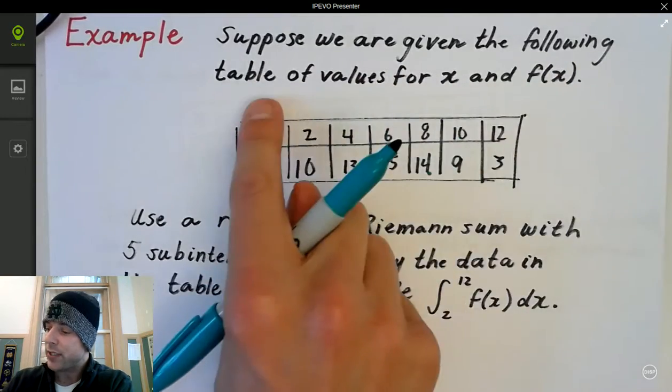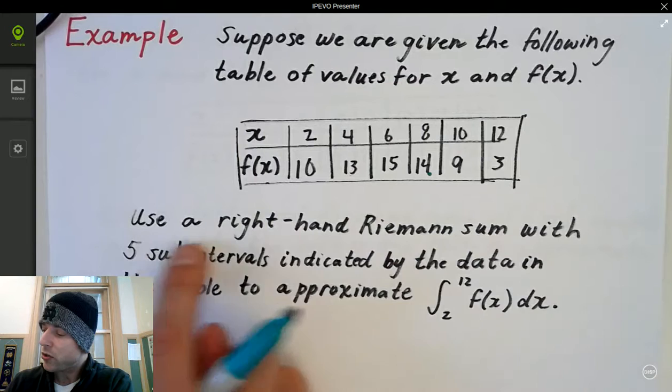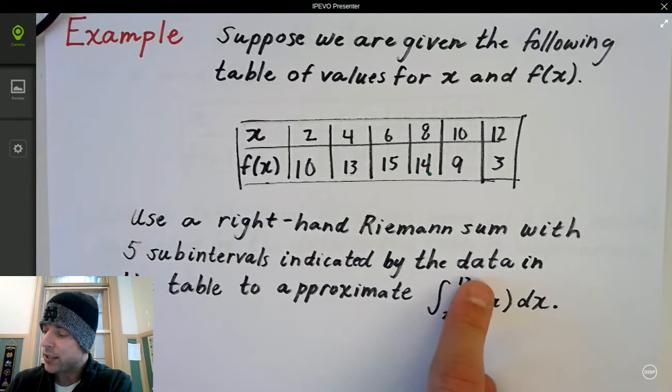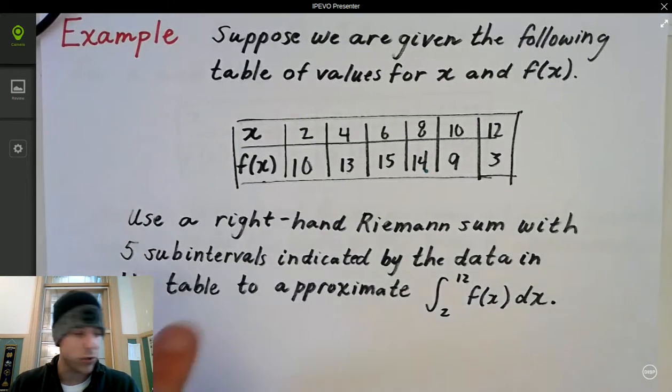Suppose we are given the following table of values for x and f(x). Use the right-hand Riemann sum with five subintervals indicated by the data to find the approximate area from 2 to 12.